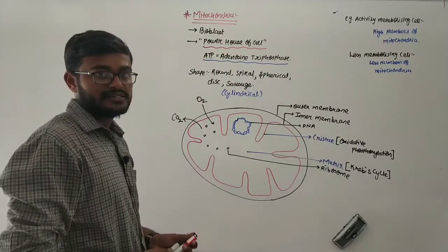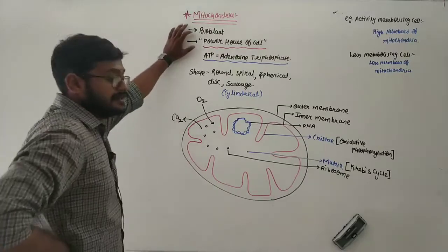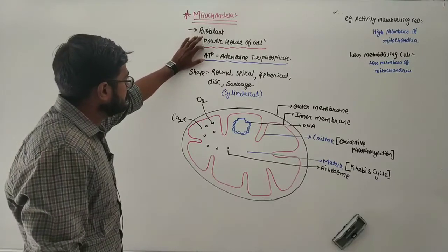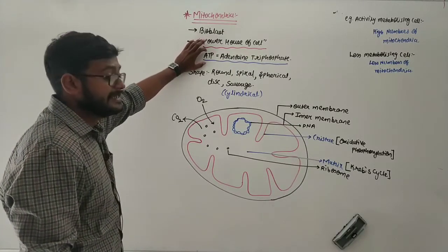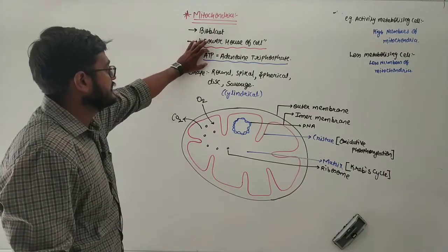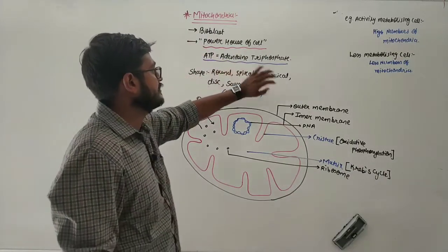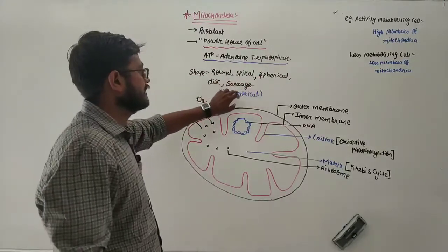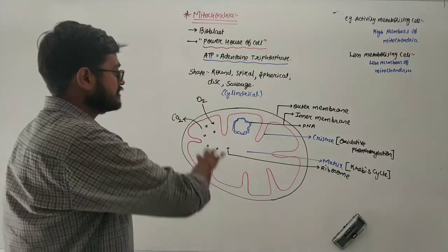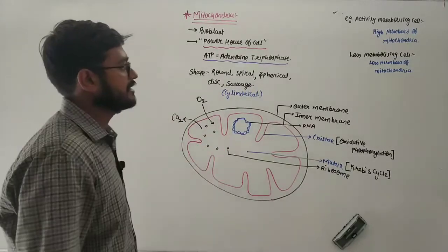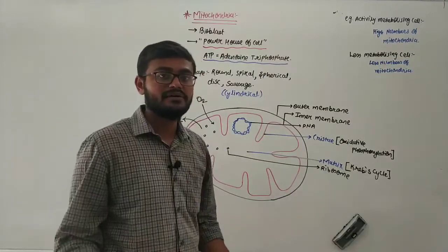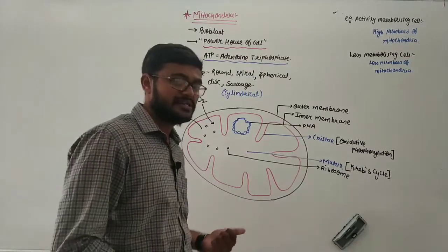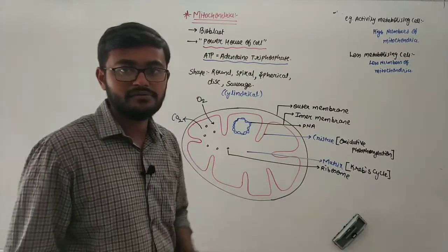To summarize the mitochondria: it was initially termed bioblast and is now called the powerhouse of the cell. ATP (adenosine triphosphate) is formed here. Its shape is round, spiral, spherical, disc, or sausage-shaped. Actively metabolizing cells have more mitochondria, and less metabolizing cells have fewer mitochondria.